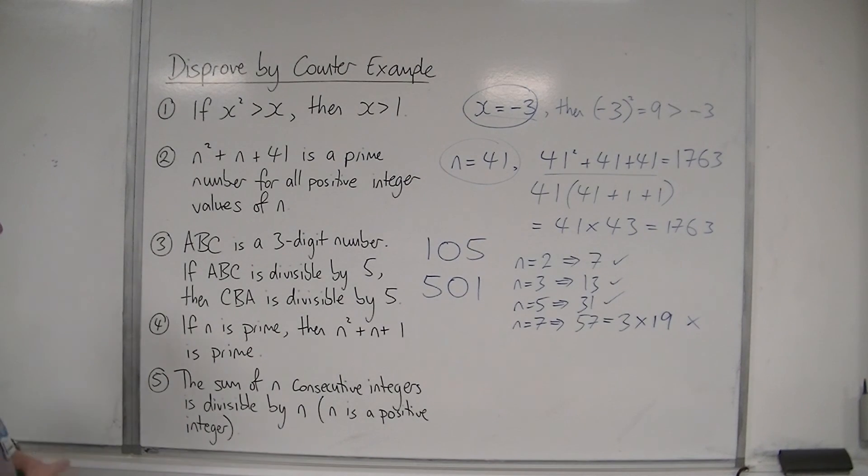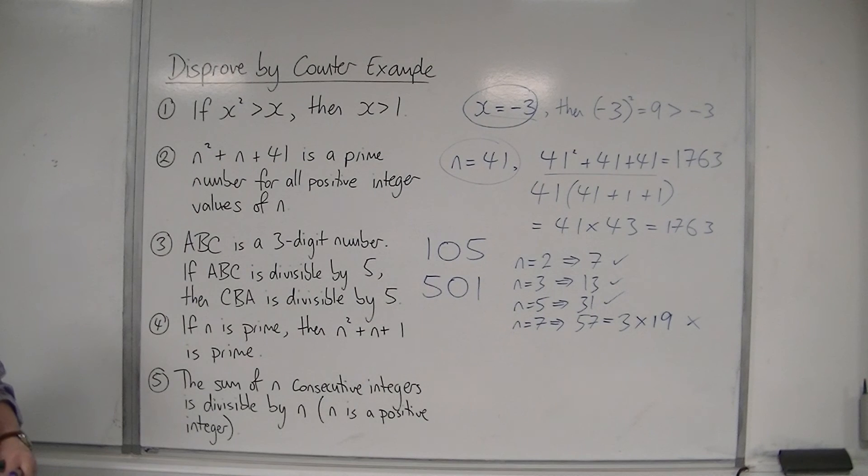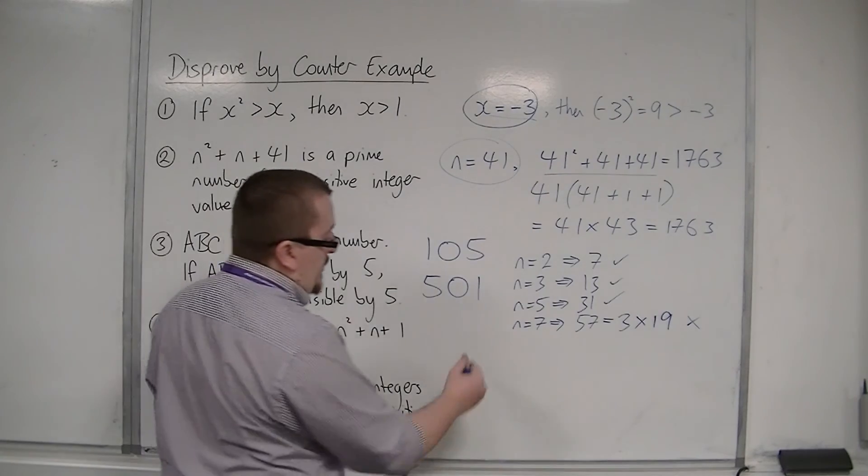Then number 5. The sum of n consecutive integers is divisible by n. So we just need to find one example where we have n consecutive integers, and then we divide it by n, and say that it's divisible by n. So the sum means adding them up. So if I had just two numbers,